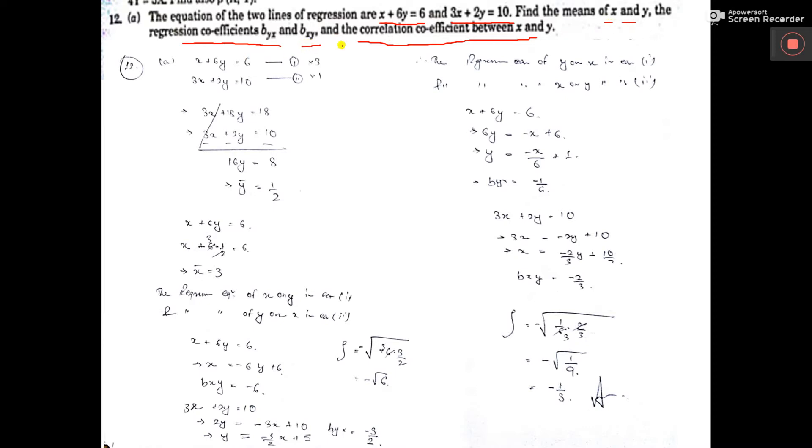So, 1, 2, 3, 4, 5 things we have to find from here. First, mean of x and y. To get mean of x and y, you solve this equation and this equation and get x and y. This x and y will be x bar and y bar. This is mean of x and mean of y.